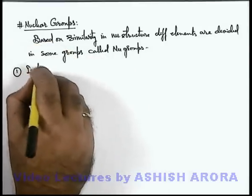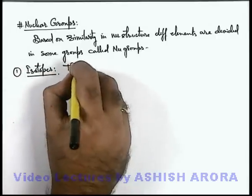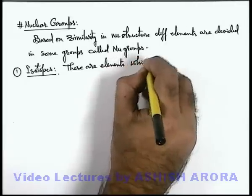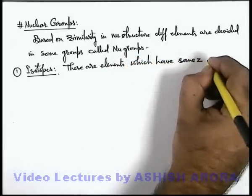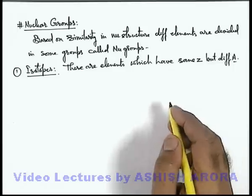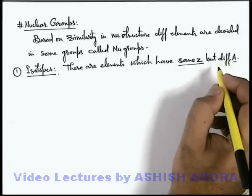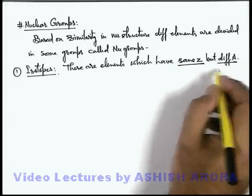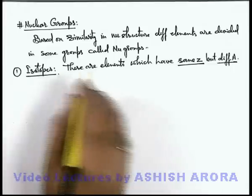Our first one is isotopes. These are elements which have the same Z but different A. Those nuclei in which the number of protons are the same but the number of neutrons are different — their atomic number will be the same but mass number will be different. Such all nuclei, or such all elements, are called isotopes of each other.